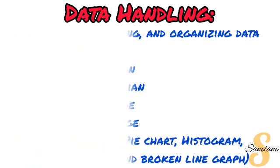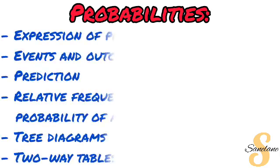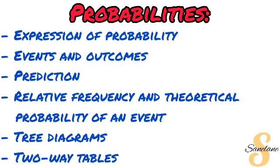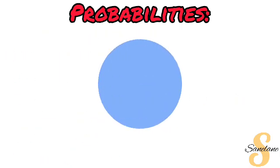The last topic in Paper 1 is the integrated question — Probability mixed with Finance and Data Handling. Under Probability specifically, you need to express a probability, determine an event and its outcome, make predictions, calculate relative frequency, determine theoretical probability, and work with tree diagrams and two-way tables. Make sure you are comfortable with everything that falls under Probability.